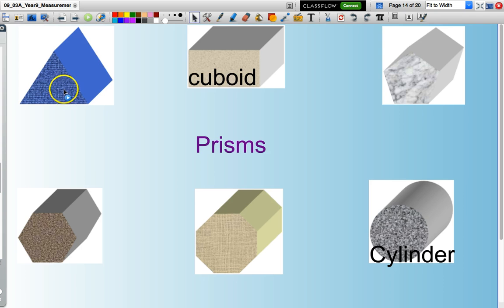This one here is a triangular based prism. Notice if I cut this up I will keep getting a triangle as the base. This here is a cuboid which is also known as a rectangular based prism.